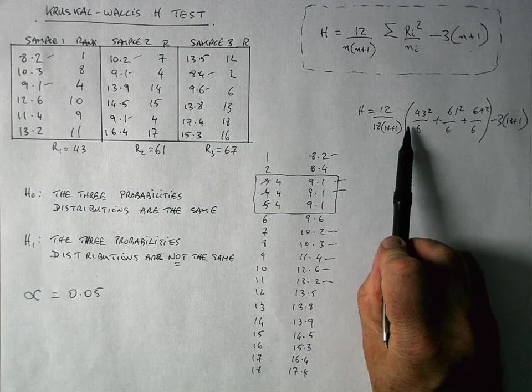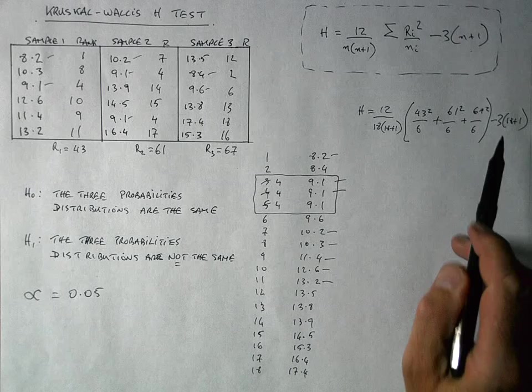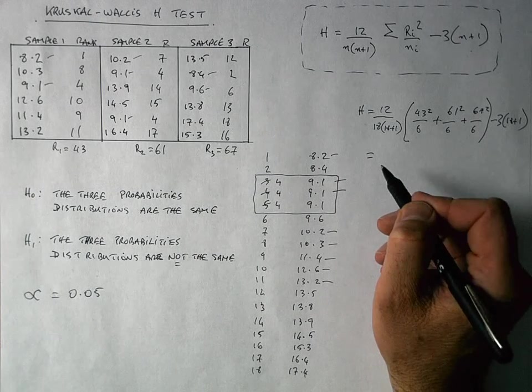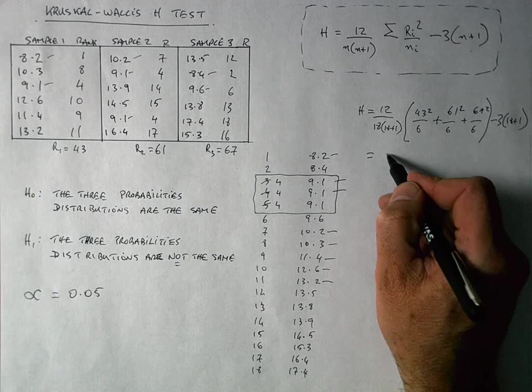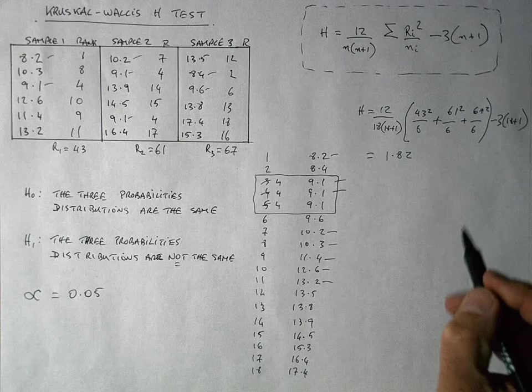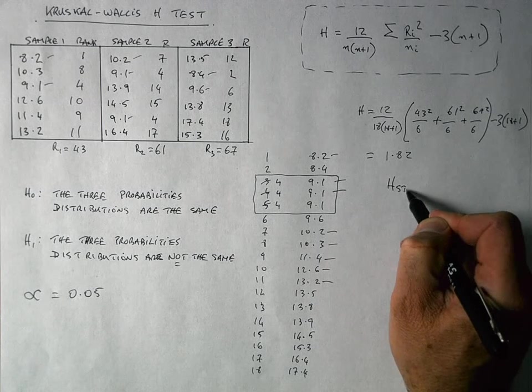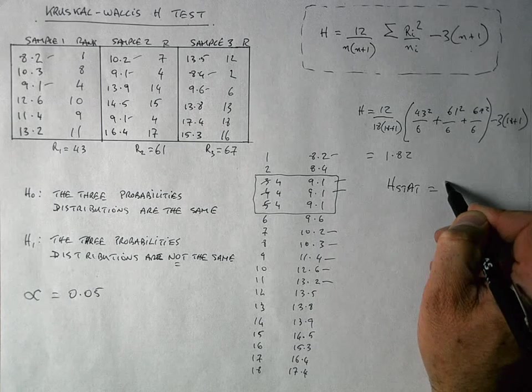OK, so follow back through there if you're not sure where each of these values came from. And when I work all of that out, I get a result of 1.82. So my H stat is equal to 1.82.